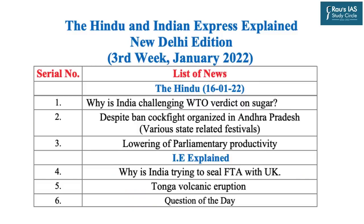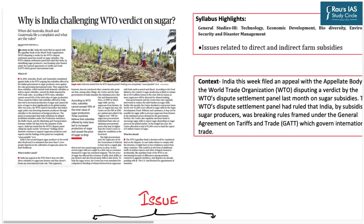The topics to be discussed have been displayed on your screen and the timestamping has been provided in the description box below. We will now discuss the topic from today's The Hindu paper, page number 11, which is in context of international trade — India and WTO challenges. Sugar is one of the most important commodities in India's agriculture as well as agricultural exports.